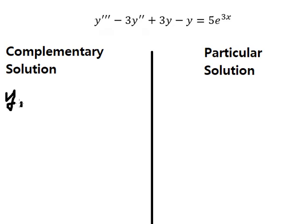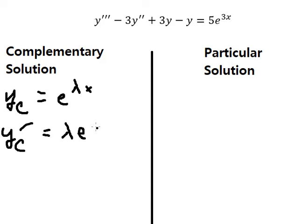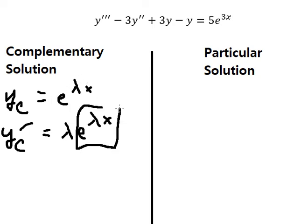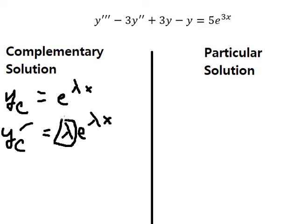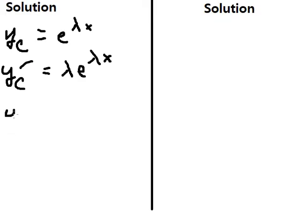We put yc equals e to the power of λx. Then we do the first derivative of yc, and we have λe to the power of λx, because the derivative of e to the power of λx keeps the same e to the power of λx, and the derivative of λx gives us λ.